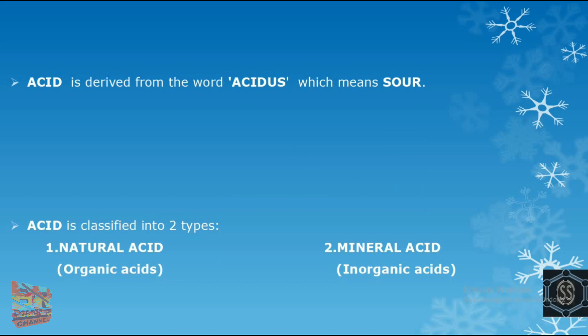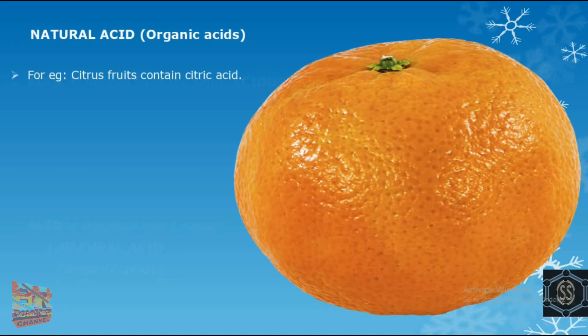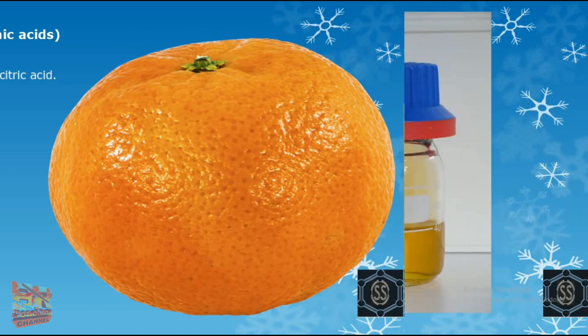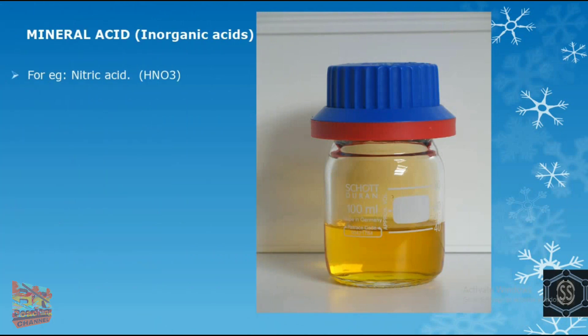Acid is further classified into two types: natural acid and mineral acid. Natural acid is obtained from natural sources, therefore also known as organic acid. Examples include citric acid present in citrus fruits like orange. Mineral acid is obtained from minerals, therefore also known as inorganic acid. Examples include nitric acid (HNO₃) and sulfuric acid (H₂SO₄).